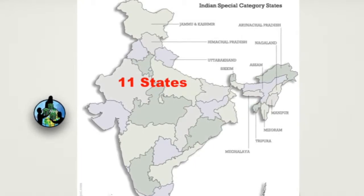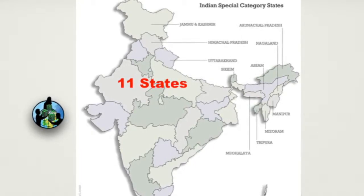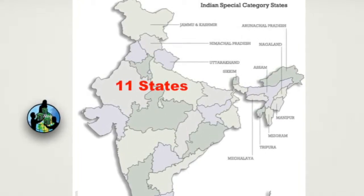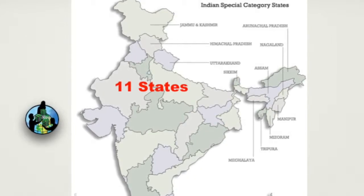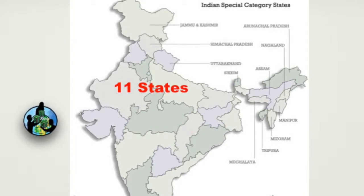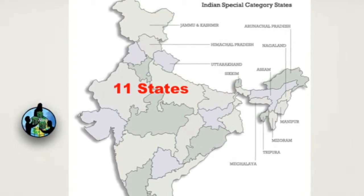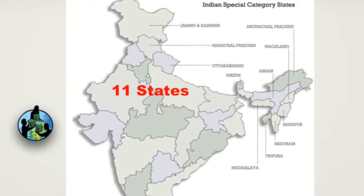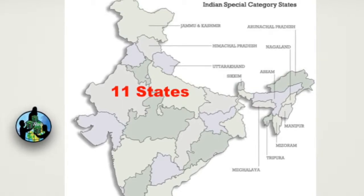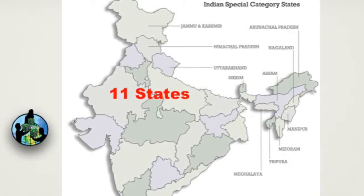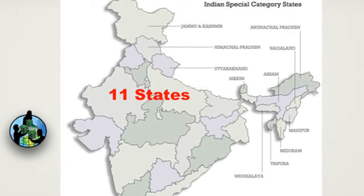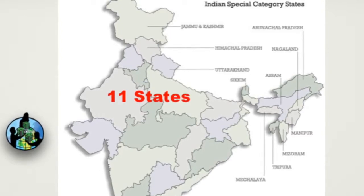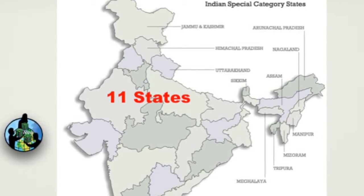Later on, eight states have been added to this list, namely Arunachal Pradesh, Meghalaya, Manipur, Mizoram, Tripura, Sikkim, Himachal Pradesh, and Uttarakhand.